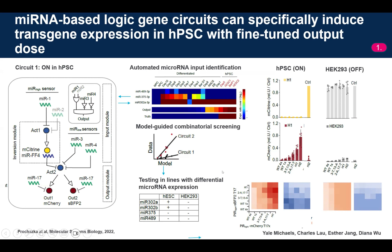Three microRNAs were defined and used to create these complex gene circuits using a model-guided combinatorial screening approach. After a few years, we could demonstrate that we can specifically induce expression only in pluripotent stem cells but not in other cell types without the matching microRNA profile. We could also fine-tune the output transgene — a fluorescent reporter — and independently control two different fluorescent proteins individually and combinatorially.